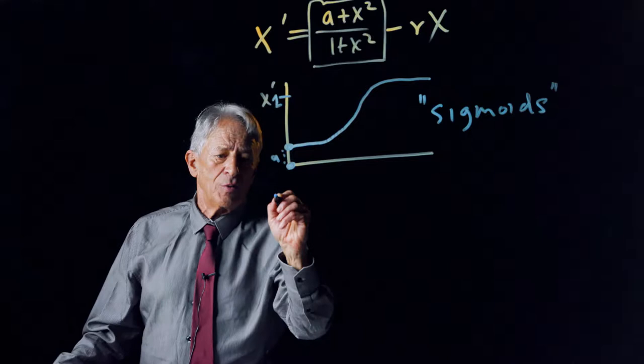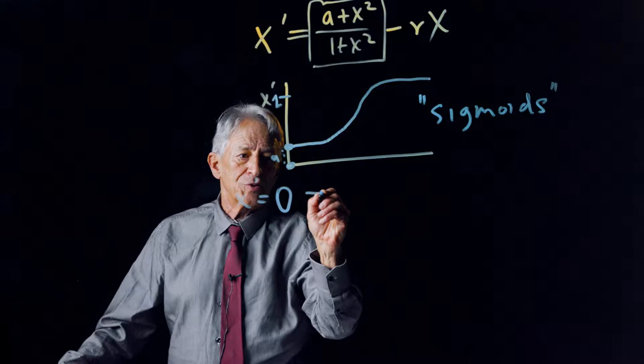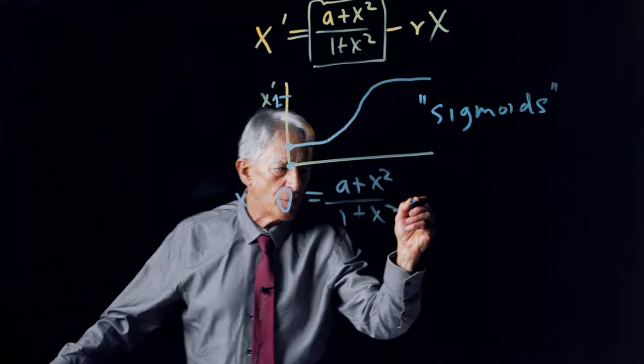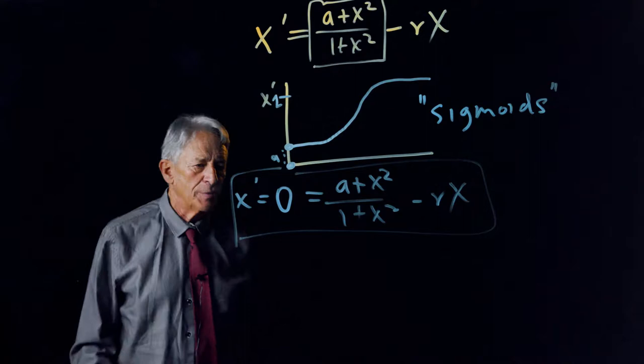Well, we know we have to set x prime equals 0, which means 0 equals a plus x squared over 1 plus x squared minus rx. That's our solution for the equilibrium points.